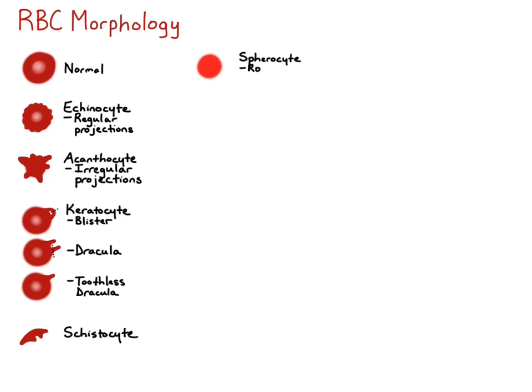The spherocyte is a very round cell with no central pallor. It looks smaller than a normal red blood cell and looks more red. Spherocytes are spherical, like a ball — they've lost their biconcave shape, and this is indicative of immune-mediated hemolytic anemia. You have to be careful when identifying spherocytes because if you look at red cells out at the feathered edge, all of them will take on a spherocyte morphology, so you must be in the monolayer when identifying them.